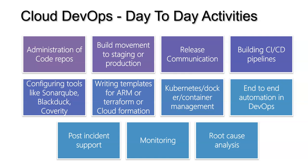Kubernetes and Docker container management is also required — whether you are going with IaaS or PaaS, the respective Kubernetes and Docker environments need to be managed and monitored. End-to-end automation is a key target in DevOps. The engineer needs to always come up with plans for how things can be automated. Today we might have 20 percent automation in our release process, but the goal is to continuously increase that each month by identifying gaps to save time.